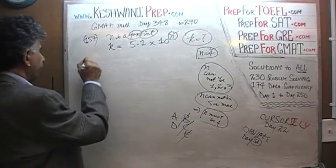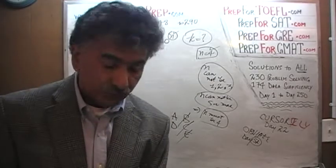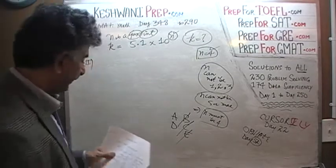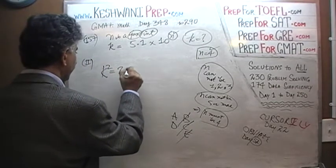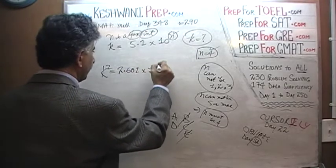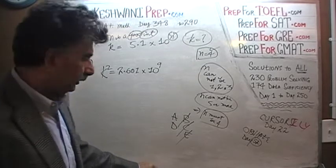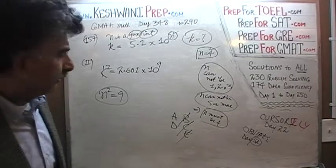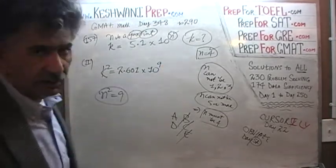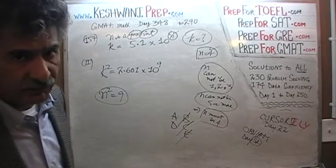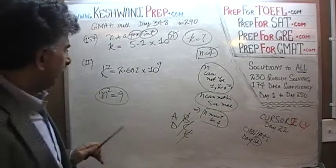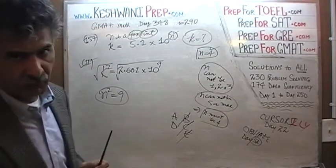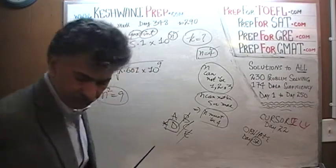The second statement tells us that k squared equals 2.601 times 10 raised to 9. If we know k squared, then k is simply the square root of that quantity — just as if n squared equals 9, you take the square root to get n. The second statement does the job quite beautifully also. The answer is D.